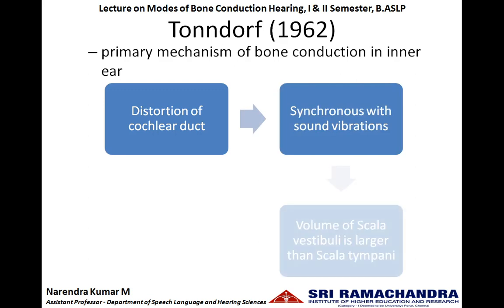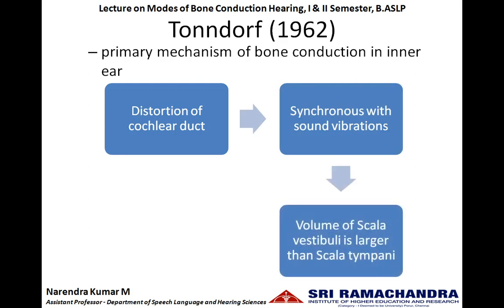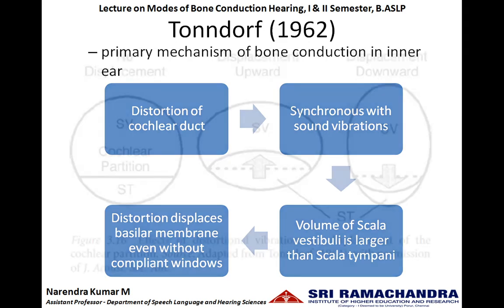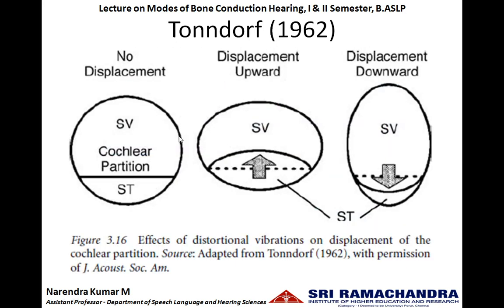The scala vestibuli volume is relatively larger than the scala tympani. This results in displacement of the basilar membrane whenever distortion takes place, even without the presence of compliant windows. When the cochlear duct structure gets distorted, the basilar membrane also gets displaced even in the absence of freely movable windows, so even at very minimal vibration the cochlear duct gets distorted and the basilar membrane gets displaced.